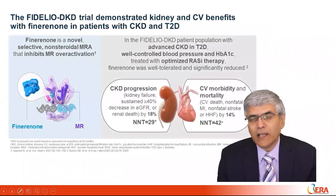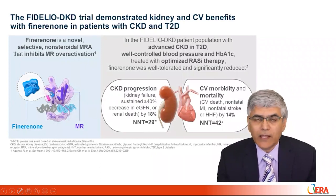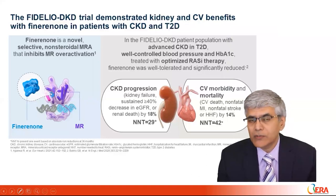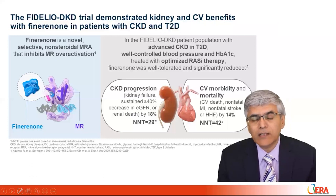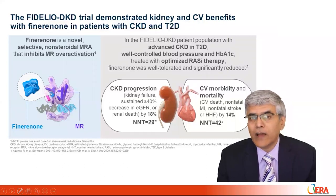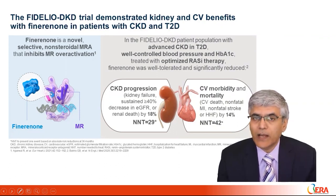Finerenone is a novel selective nonsteroidal MRA that inhibits MR overactivation. In the Fidelio-DKD population — which had albuminuria, advanced CKD, type 2 diabetes, well-controlled blood pressure and haemoglobin A1C, and were treated with optimized RAS inhibitor therapy — it was demonstrated that finerenone reduced CKD progression by 18% and cardiovascular morbidity and mortality by 14%. The primary endpoint was CKD progression, while cardiovascular morbidity and mortality was a key secondary endpoint. Both were pre-specified and the study was powered to evaluate each outcome independently.